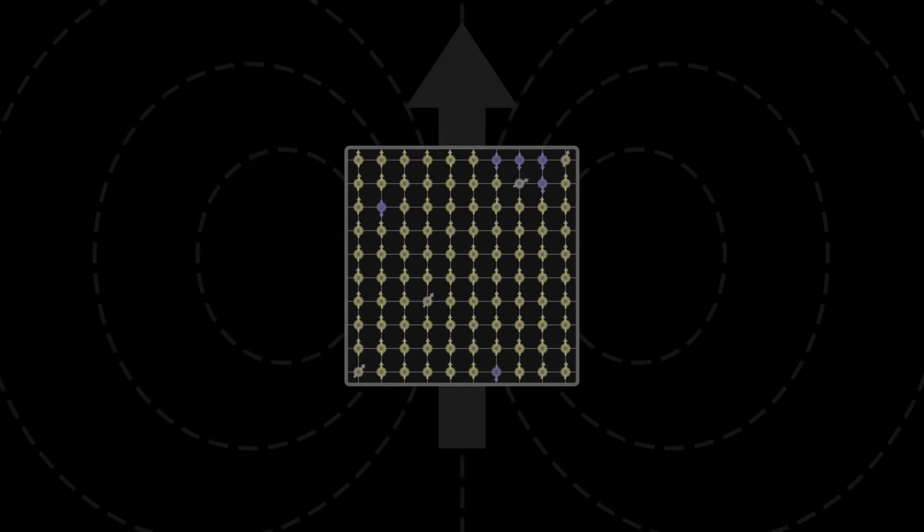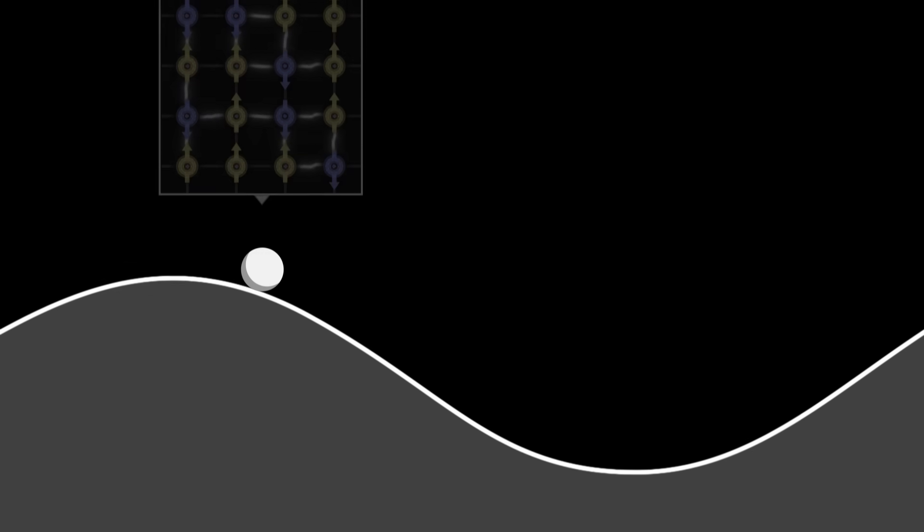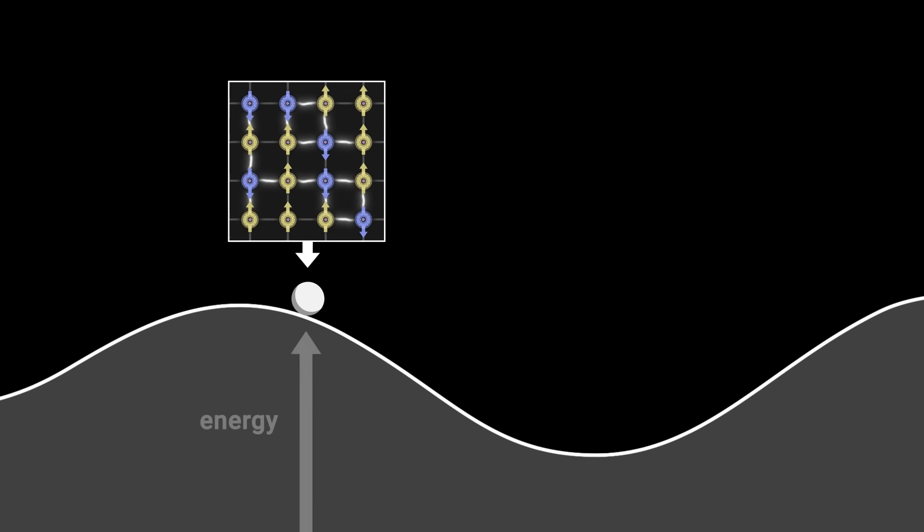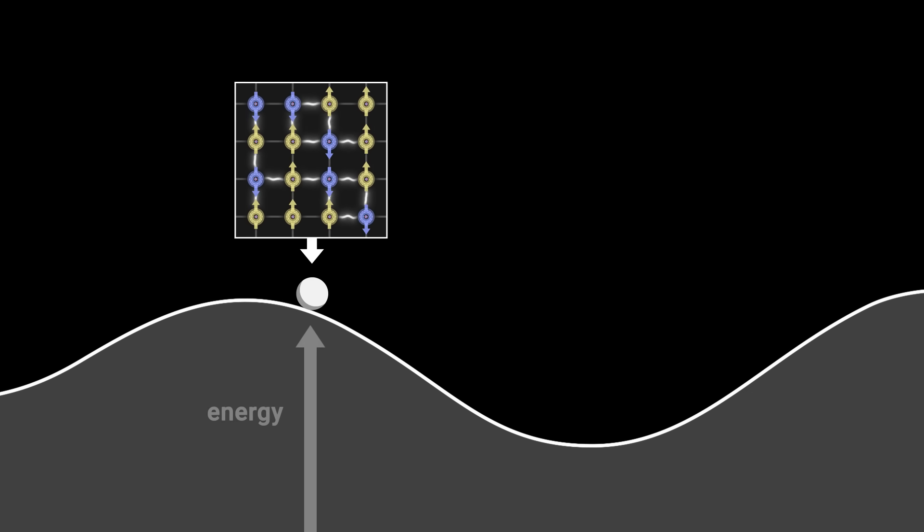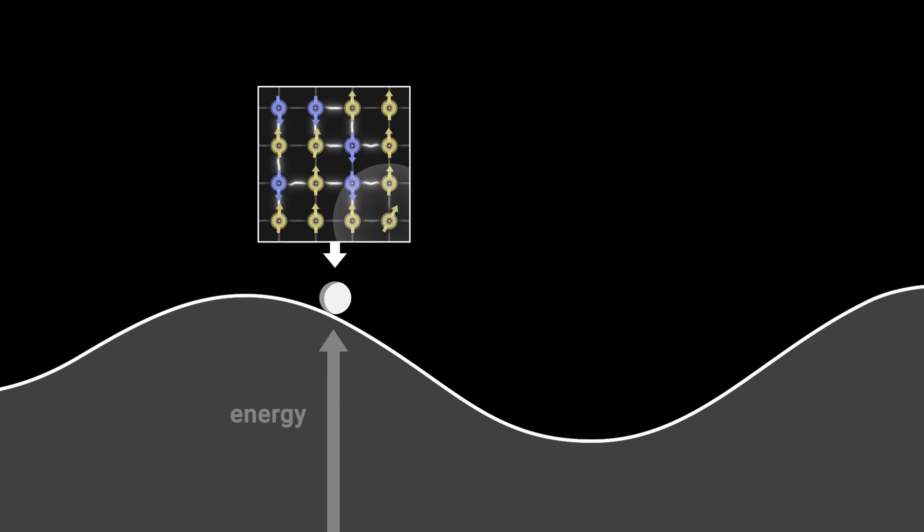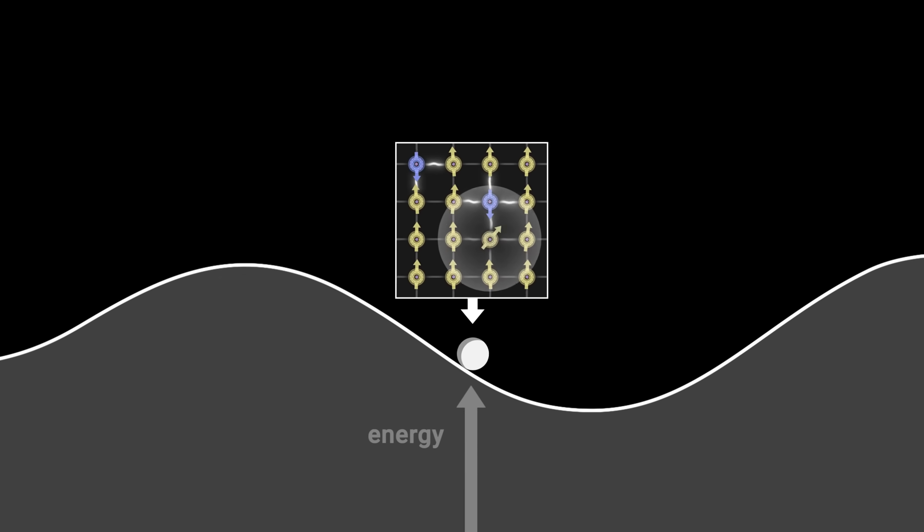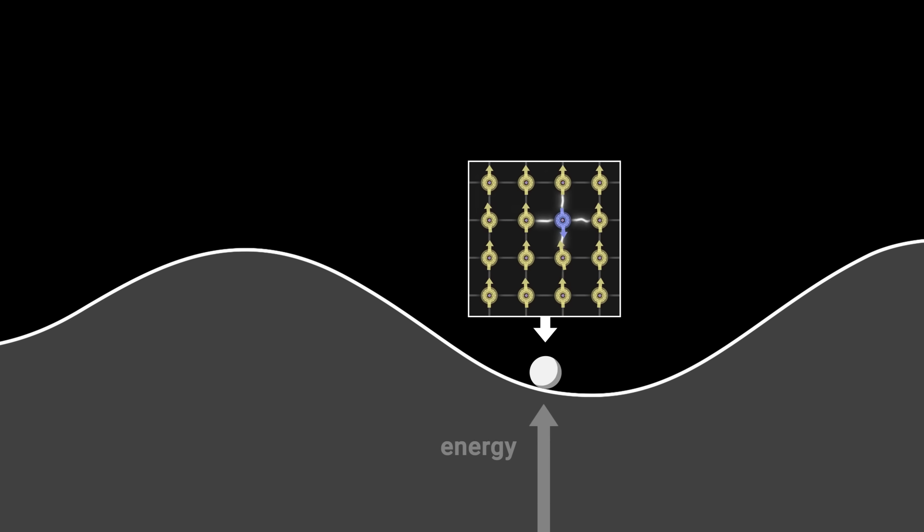To better understand this model, we can imagine it as a marble rolling across a mountainous landscape. The marble's position represents the grid's configuration at a specific moment in time, while its altitude represents the energy associated with that configuration. Over time, the marble rolls towards lower, more stable configurations as the spins align with each other and the grid relaxes.